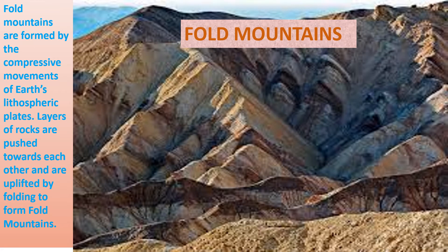Endogenic processes are also known as internal processes, such as plate tectonics, earthquakes, and volcanic eruptions. These take place inside the deep layers of the lithosphere. Exogenic processes are also known as external processes — ones we can observe from the outside — such as the action of rivers, rain, wind, and glaciers. These are also known as the processes of weathering.